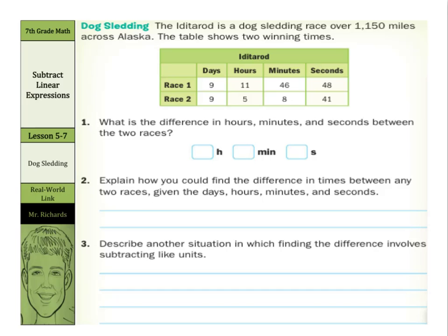Our real-world link is dog sledding. The Iditarod is a dog sledding race over 1,150 miles across Alaska. The table shows two winning times. Race 1 was 9 days, 11 hours, 46 minutes, and 48 seconds. Race 2 was 9 days, 5 hours, 8 minutes, 41 seconds. What is the difference in hours, minutes, and seconds between the two races?